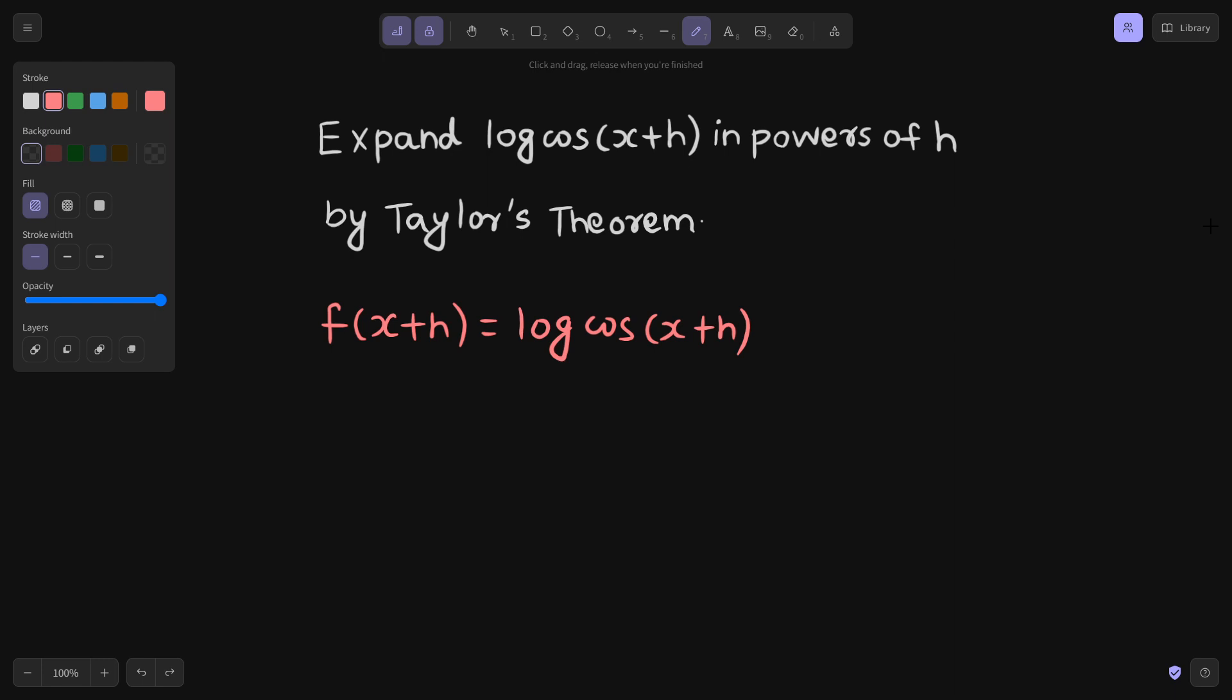The second step is put h equals to 0 in order to get function in x. So put h equal to 0. What we get? f(x) = log cos(x).